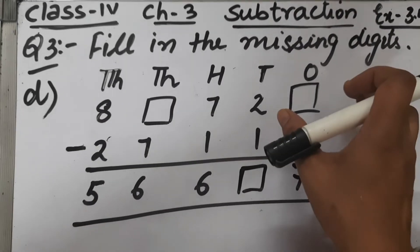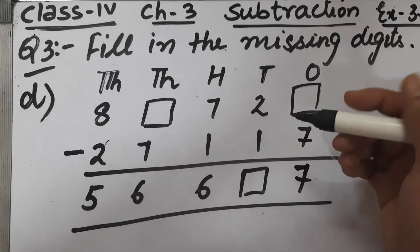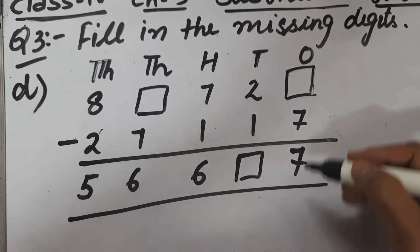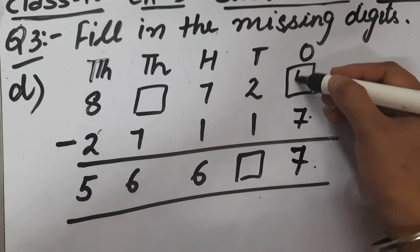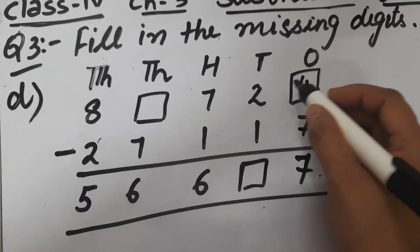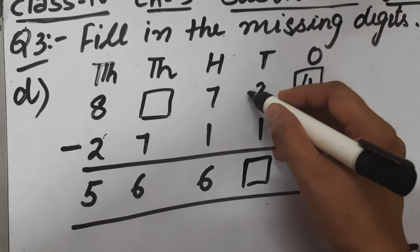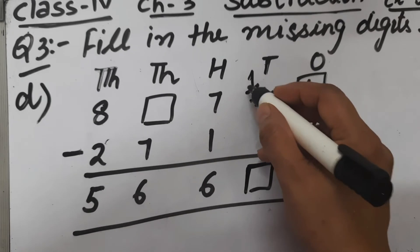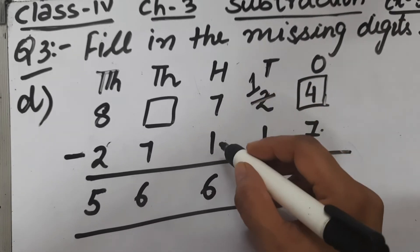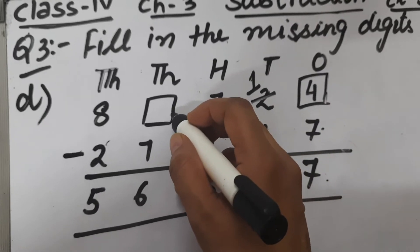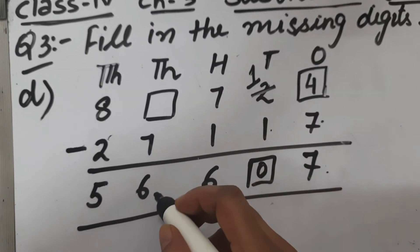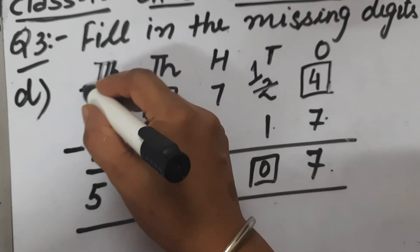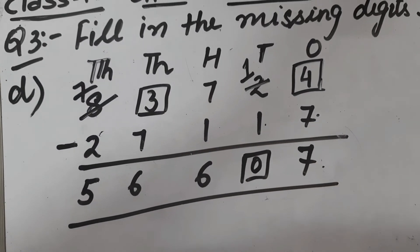Now let's start part D. Whenever we have to find the minuend, we add the subtrahend and difference. So 7 plus 7 is 14 — 4 comes here, and since 14 means 1 was borrowed, this becomes 1. Now 1 minus 1 is 0, and 7 minus 1 is 6. Here also we find the minuend: 7 plus 6 is 13, so 3 comes here and the next digit is decreased by 1, becoming 7.